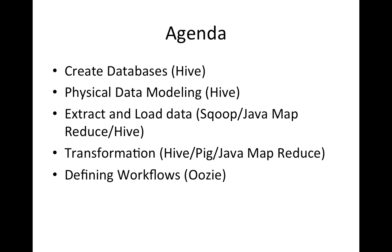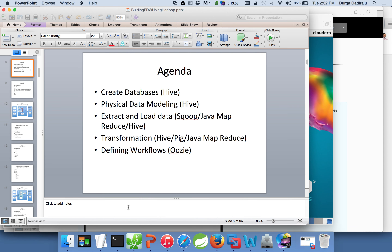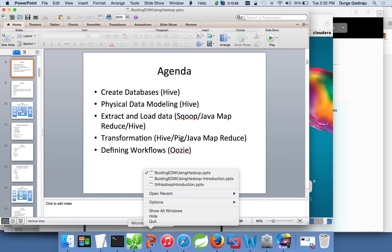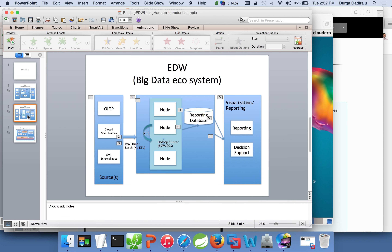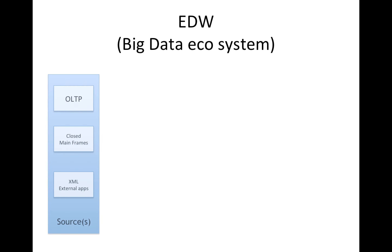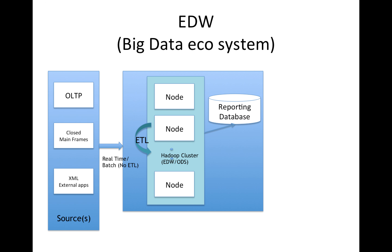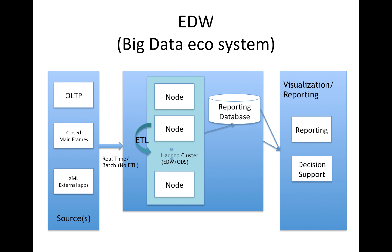Going back to the picture of how to build the data warehouse — if you remember, ODS and DW are nothing but databases. We have to create the database and do the ETL, get data from source systems into Hadoop, and also from Hadoop to the reporting database, and then reporting will be done from the reporting database.